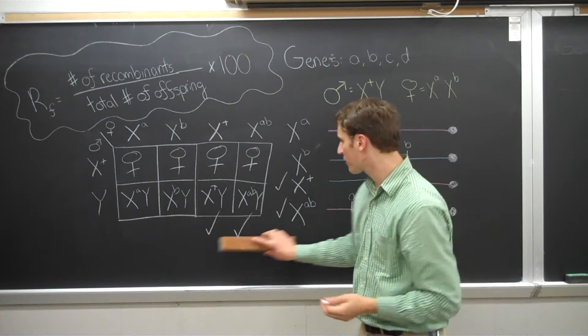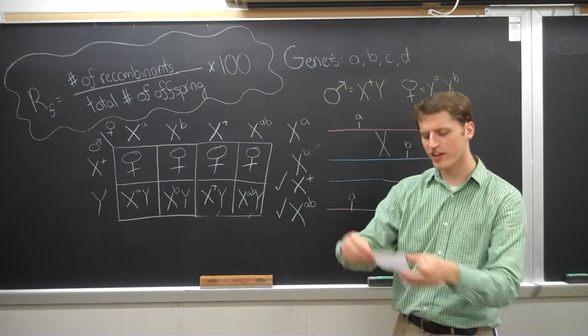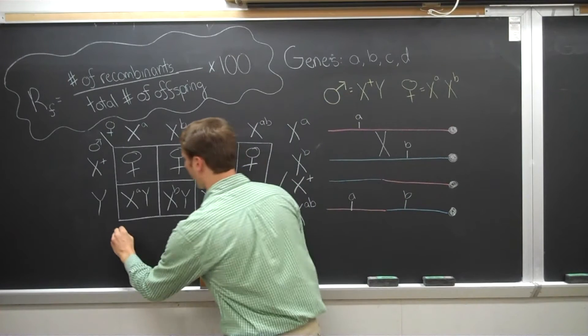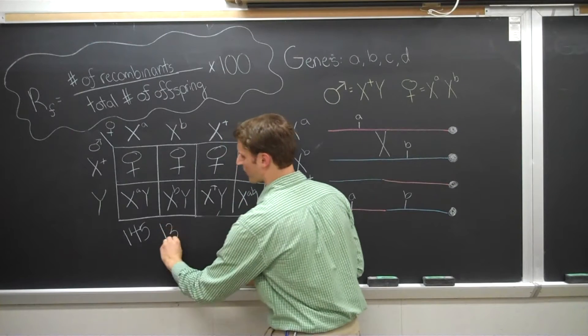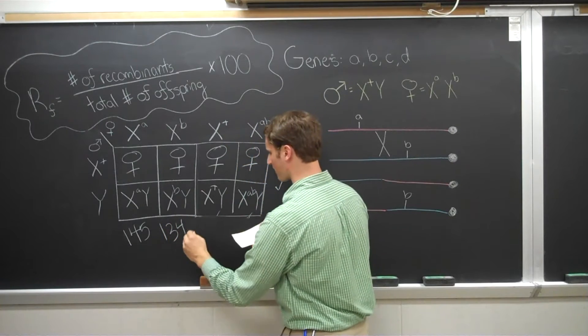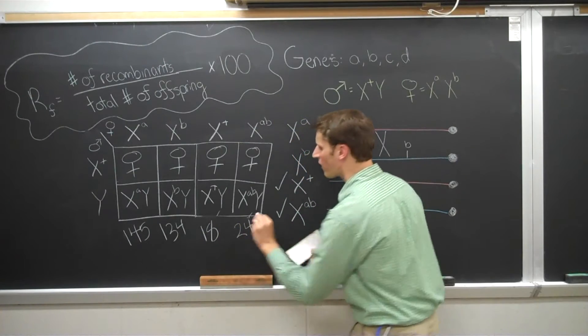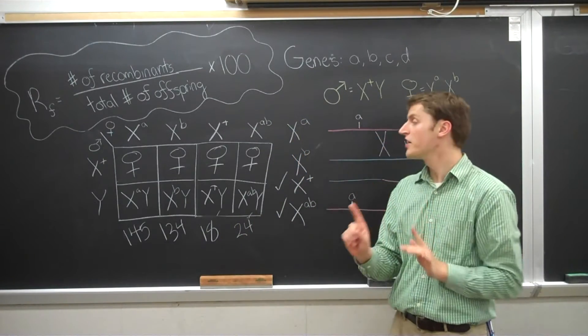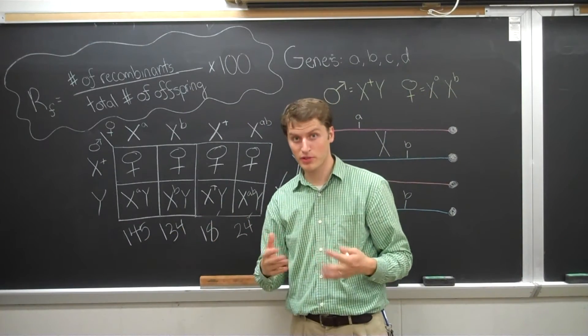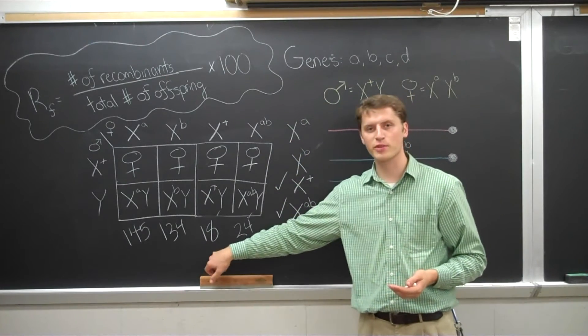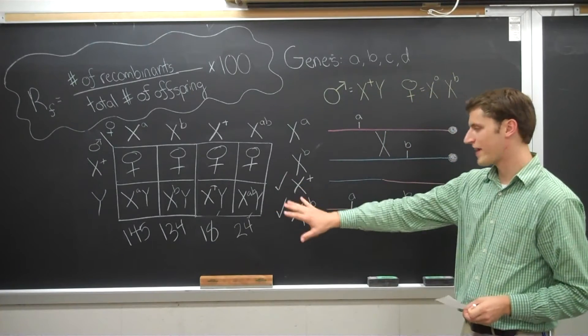So as you guys did earlier, when you came in, if I were to come in and count these males, and let's say, hypothetically, I get 145 of those guys, 134 of those, 18 wild type, and 24 with both mutants. Those are my counts. Now, theoretically, the non-recombinant offspring numbers should be pretty close together, and the recombinant offspring numbers should be pretty close together. This is then the outcome.